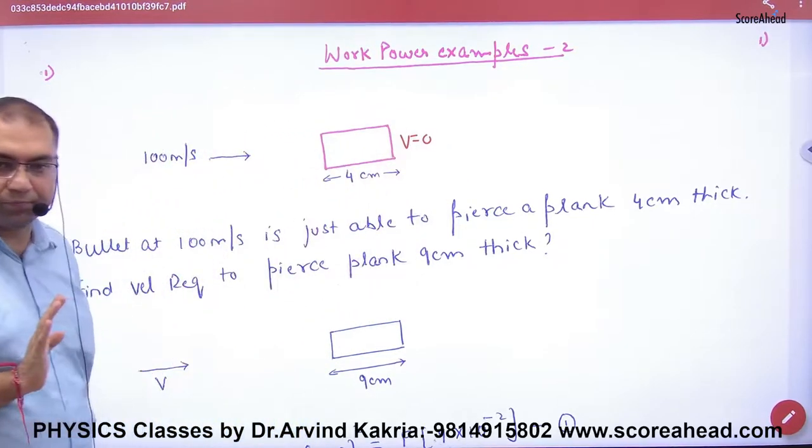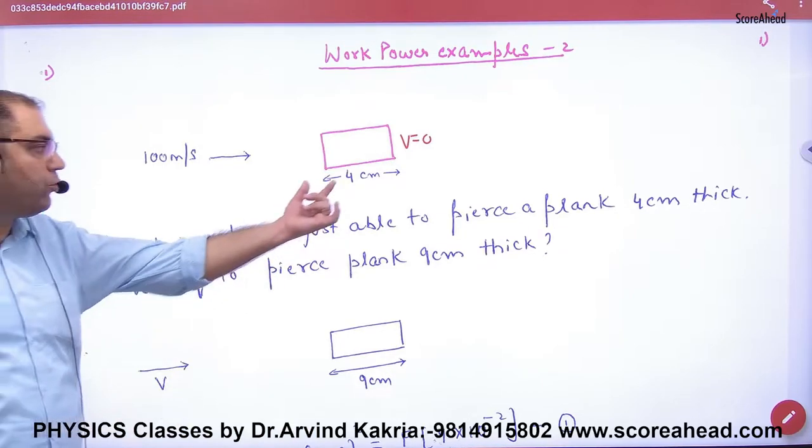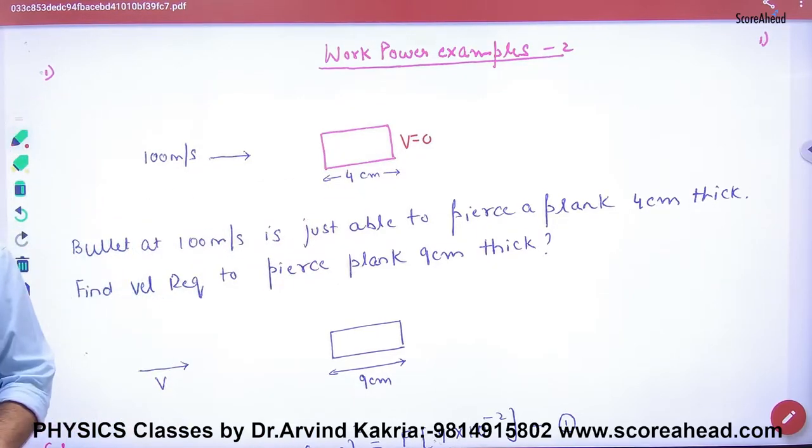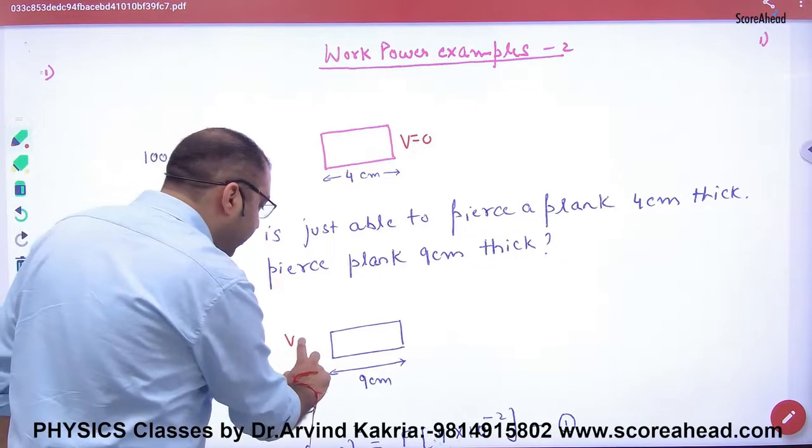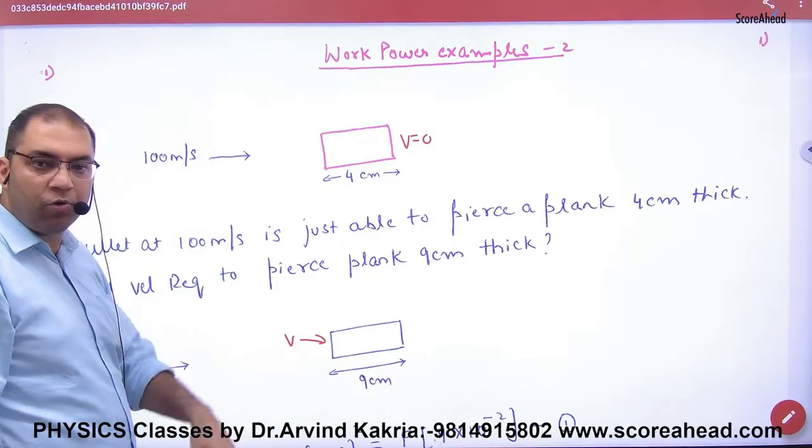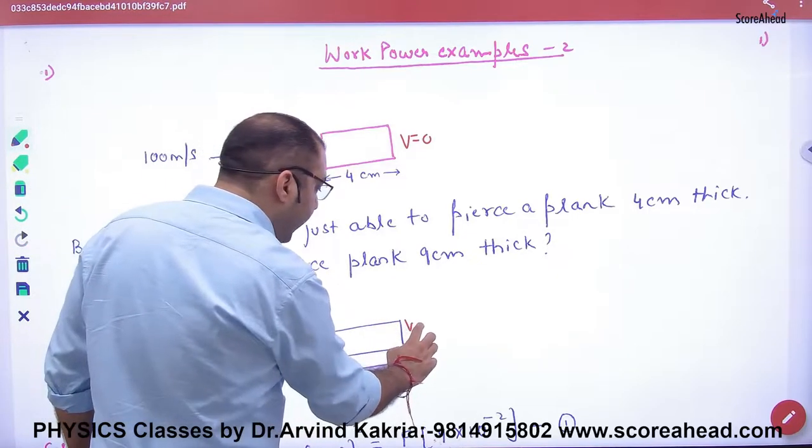Zero. And how many centimeters in the plank? Four. Now in case number 2, the bullet will enter. How many times will it enter so that it will stop at the plank? Nine centimeters.